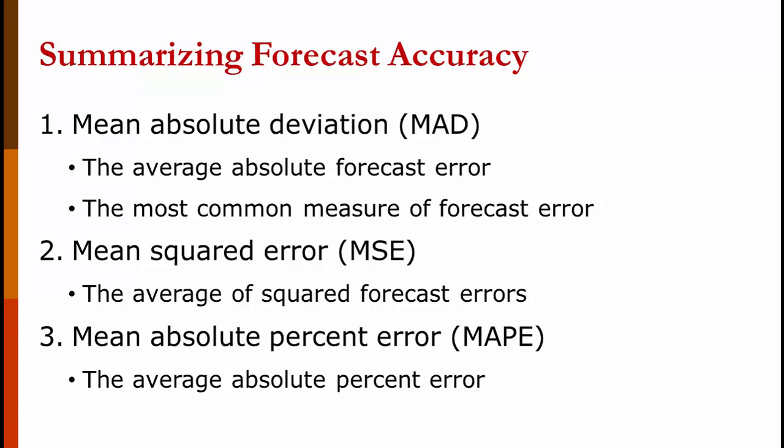There are three primary measures of forecasting accuracy. The mean absolute deviation, or the MAD. The mean squared error, or MSE. And the mean absolute percent error, or MAPE. The MAD is just the average absolute forecast error. It's the most common way of measuring forecast error. Every forecasting package I've ever seen would give you the MAD. It works well for selecting smoothing constants in exponential smoothing, for example, or weights in a weighted moving average.